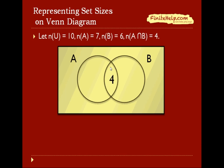So now we know that the middle area is 4, we can figure out what this area is, this crescent region here. Since the number of elements in B is 6, so this entire B has 6 in it, and if 4 is over here, that must mean it leaves 2 in this area.